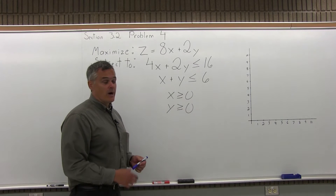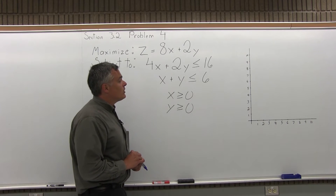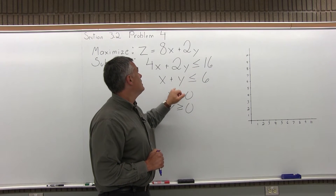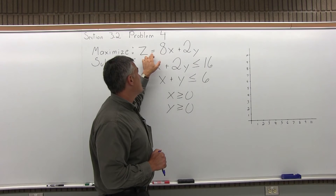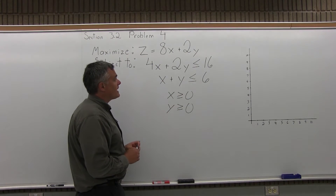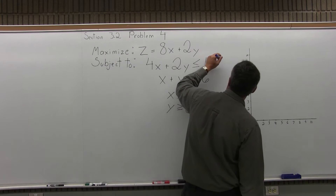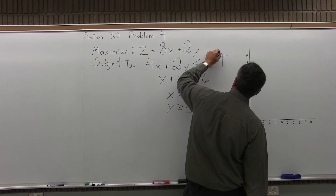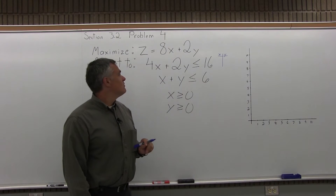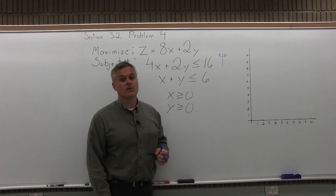Part one: graph the feasible region. When I graph this, I only want to graph the parts of the problem that have an inequality symbol. The part with an equation does not get graphed — that gets used later on. I'm going to start with 4x plus 2y is less than or equal to 16, and to graph that, I'll make a little chart next to it with an x column and a y column. I want to pretend that it's 4x plus 2y equals 16, and find two points that would make that equation true.